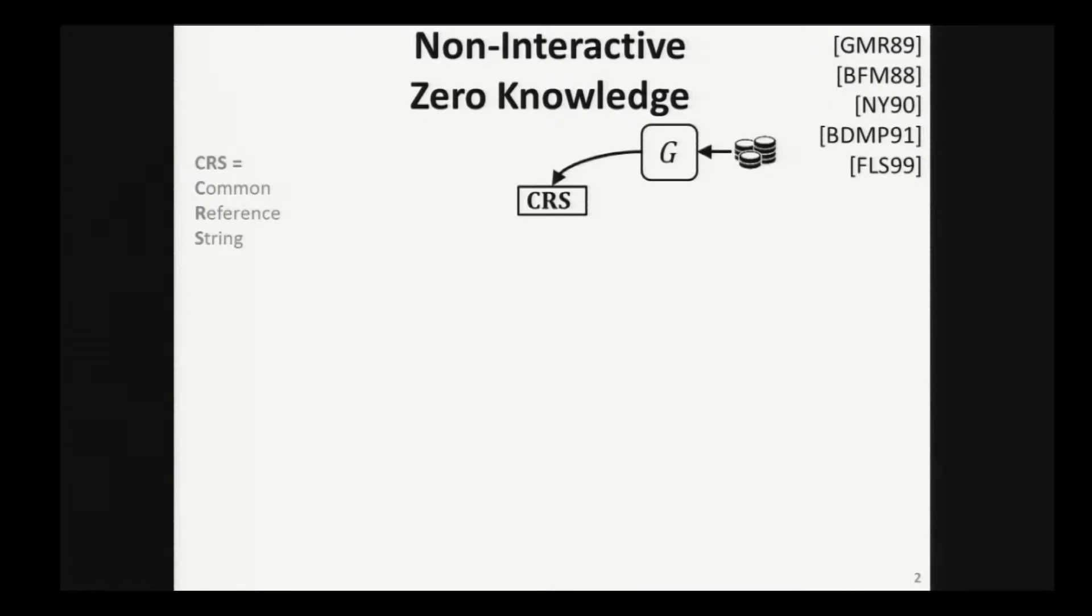Specifically, today we focus on non-interactive zero knowledge, or NIZK as we call it in short. So at the start of time, there is a generator G that takes a bunch of random coins and produces a set of public parameters that we usually call common reference string, or CRS for short.